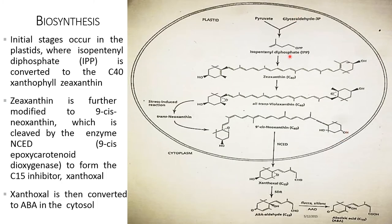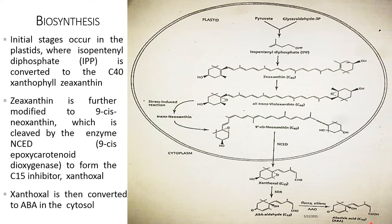Biosynthesis of abscisic acid takes place in the plastid. The initial stage occurs in the plastid where isopentenyl diphosphate (IPP) is converted into a 40-carbon xanthophyll called zeaxanthin. Zeaxanthin is further modified into 9-cis-neoxanthin, which is cleaved by the enzyme NCED (9-cis-epoxycarotenoid dioxygenase) to form the C15 inhibitor xanthoxol. Xanthoxol is then converted into abscisic acid in the cytosol.